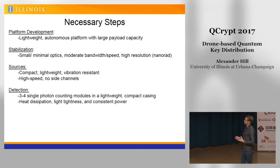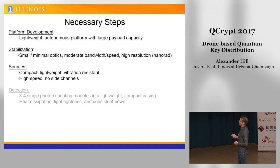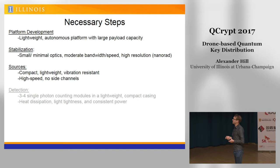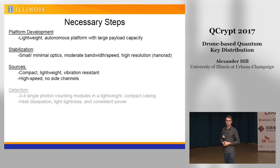I'm going to focus on three things: the actual platform — what sorts of drones you actually need — what you need to put on the drone to close the link, and our efforts in developing pointing stabilization technologies between the drones. The trouble with drones is that payloads need to be very small, which means everything you'd do on a truck needs to be scaled way down and still function over a decent distance. I'll also talk about developing the sources, which need to be high speed with no side channels while simultaneously being compact and vibration resistant.